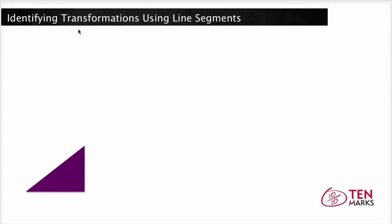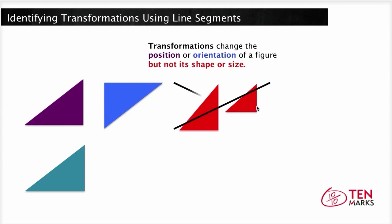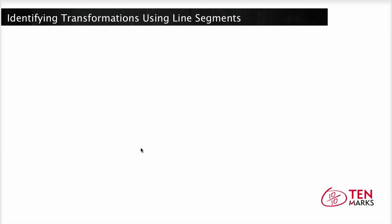This video explains how to identify transformations such as reflections, rotations, and translations using line segments. Transformations change the position or orientation of a figure but not its shape or size. Any original figure before a transformation is called a pre-image, and the figure after transformation is called its image.